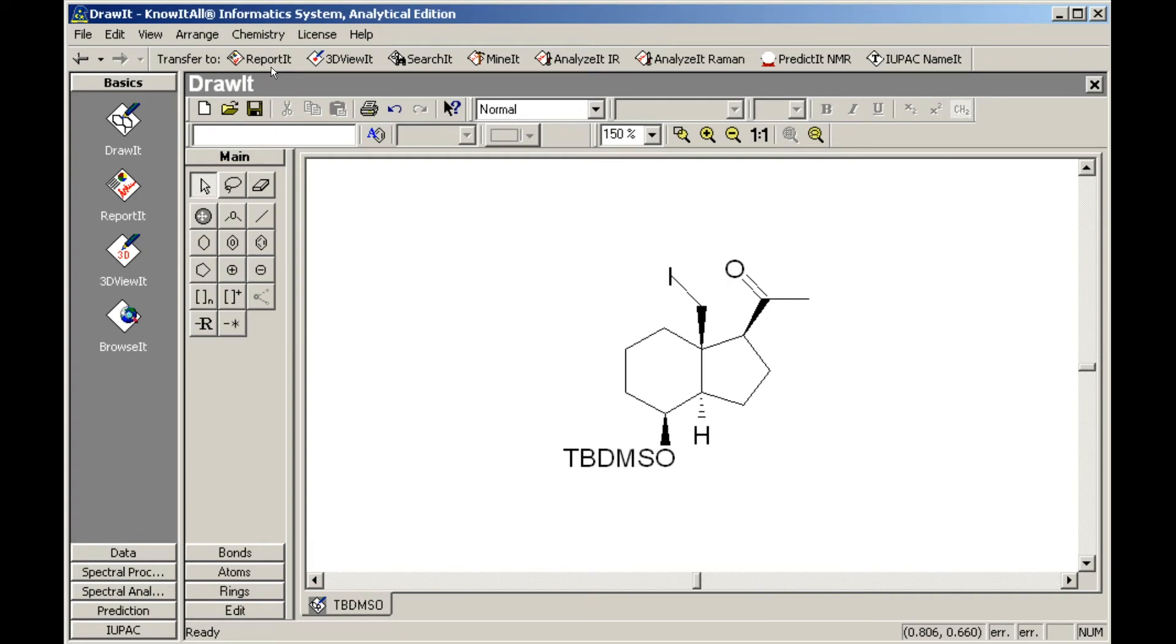We begin with the structure created using the Draw-It application. Click the Report-It button in the transfer bar to transfer this structure to the reported application.